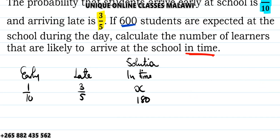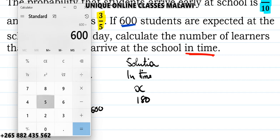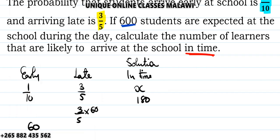The number of students for early is 1 over 10 times 600, which is 60. For late, 600 divided by 5 is 120. If you multiply by 3, you get 360. We count the on-time as x, which is 180.